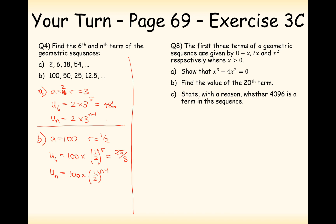Now question 8 in the textbook: the first three terms of a geometric sequence are x minus 8, 2x, and x squared — show that this is true. What we're looking for is the common ratio between the first and second terms to be the same as between the second and third terms. We calculate this by doing second term divided by first term, which must equal third term divided by second term.